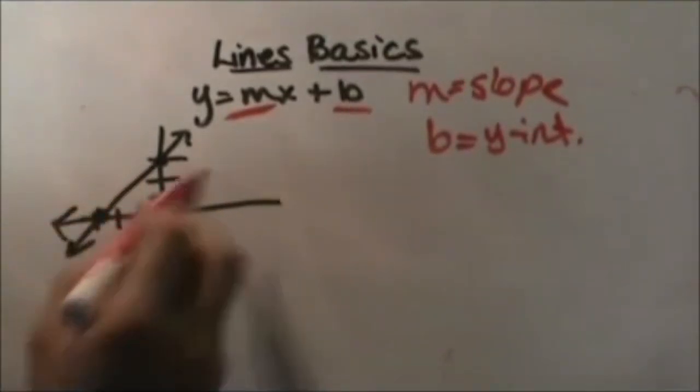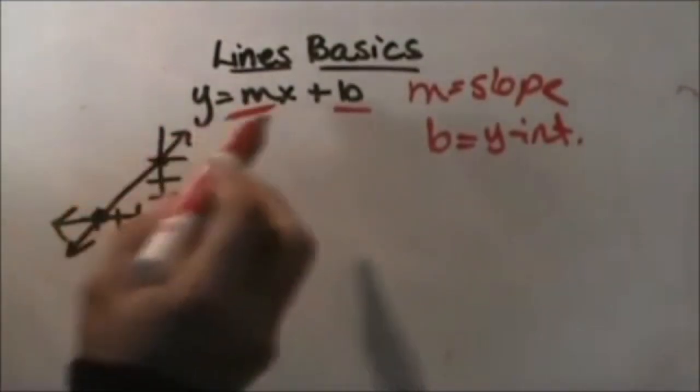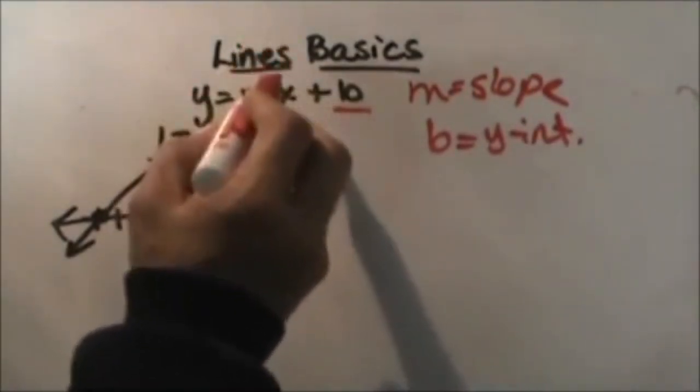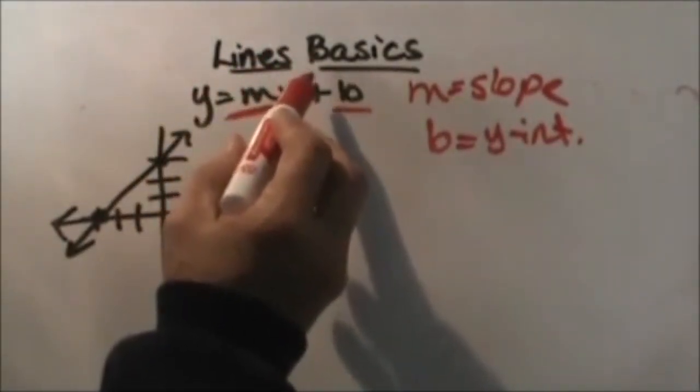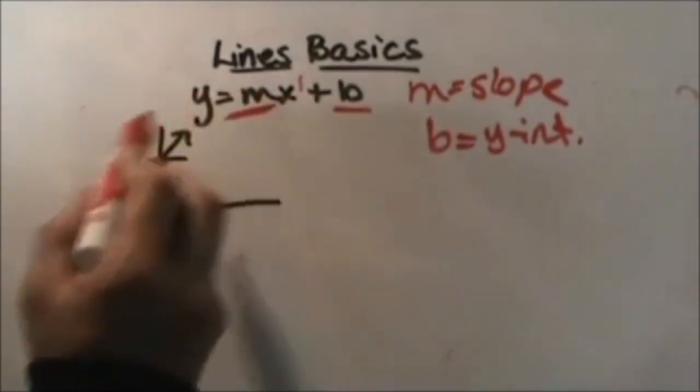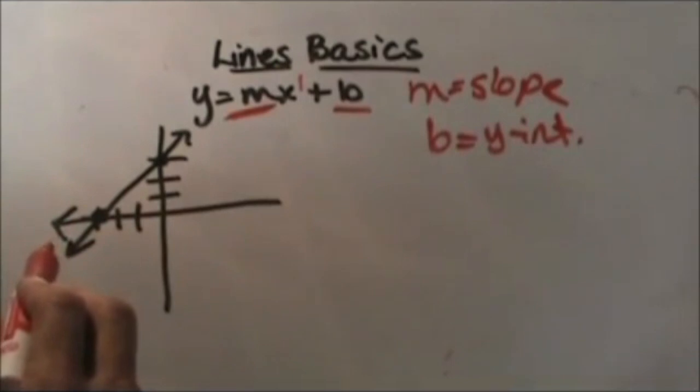So here is an equation, or a line graph, and the other thing you have to notice about a linear equation is x is always to the first power. We don't write it, we assume that there's a little one here, but any time x is to the first power we know we have a linear equation.